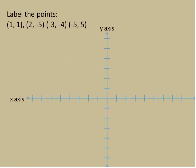So those are the four quadrants and what values of points you'd have in each. Now we're going to practice labeling some points. We're given some ordered pairs — that's what these are called — with x-values and y-values, and we're going to draw the points on the board. The first point is (1, 1). To do that, we start at the origin, move one place to the right along the x-axis, and then one place up on the y-axis. That would be our first point, right here.